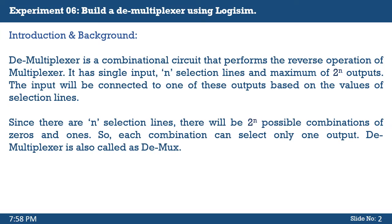This week we are going to build a demultiplexer using Logisim. A demultiplexer is a combinational circuit which performs the reverse operation of a multiplexer. In a multiplexer we use a maximum of 2^n inputs and one output, but in a demultiplexer it has a single input, n selection lines, and a maximum of 2^n outputs.